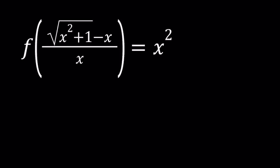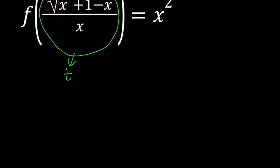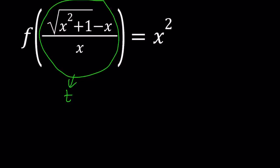Alright, so let's go ahead and set this gigantic thing to something — how about calling it t? Under those conditions, I get the following equation, which kind of looks simple: f of t equals x squared. It's nice.